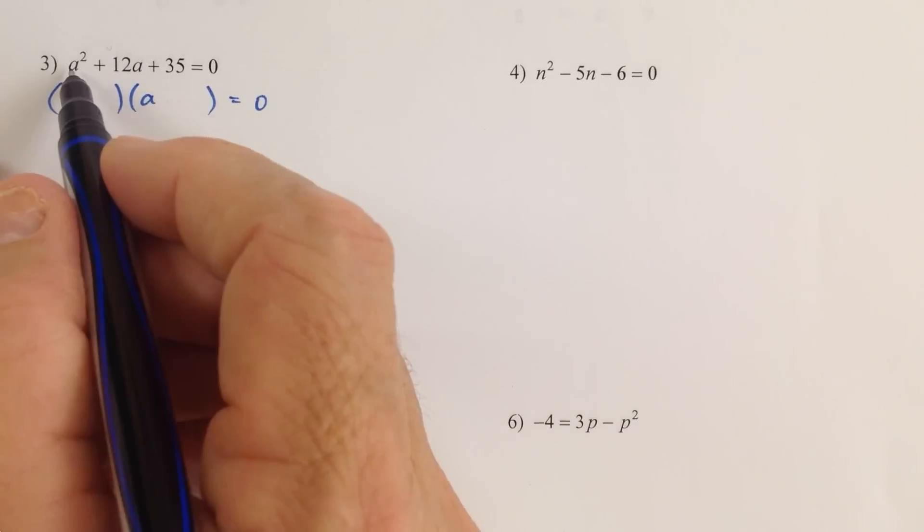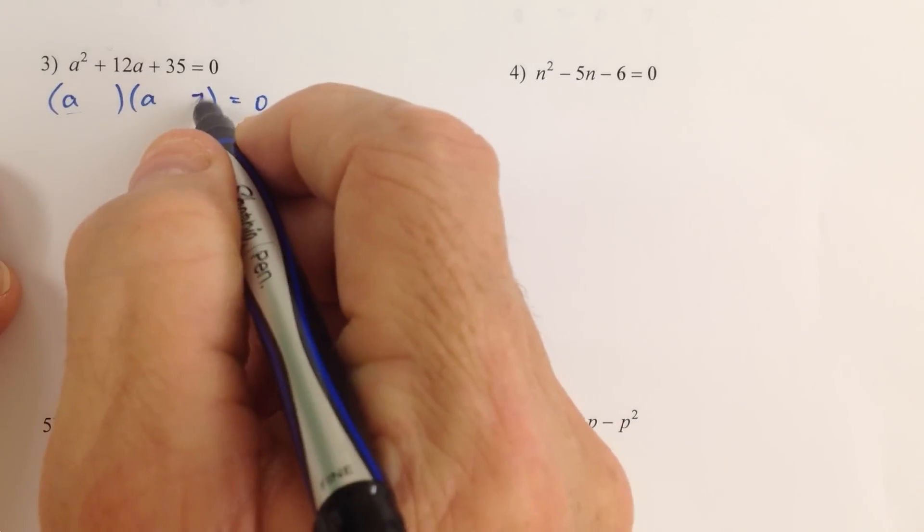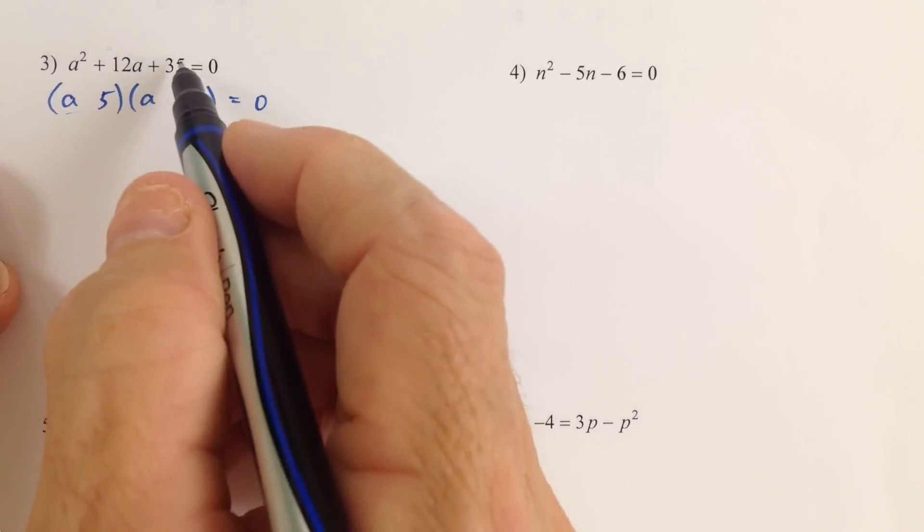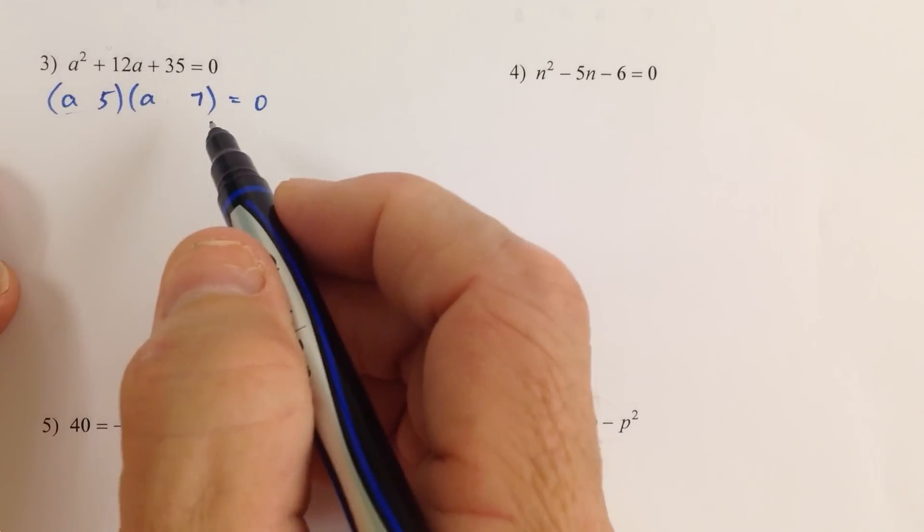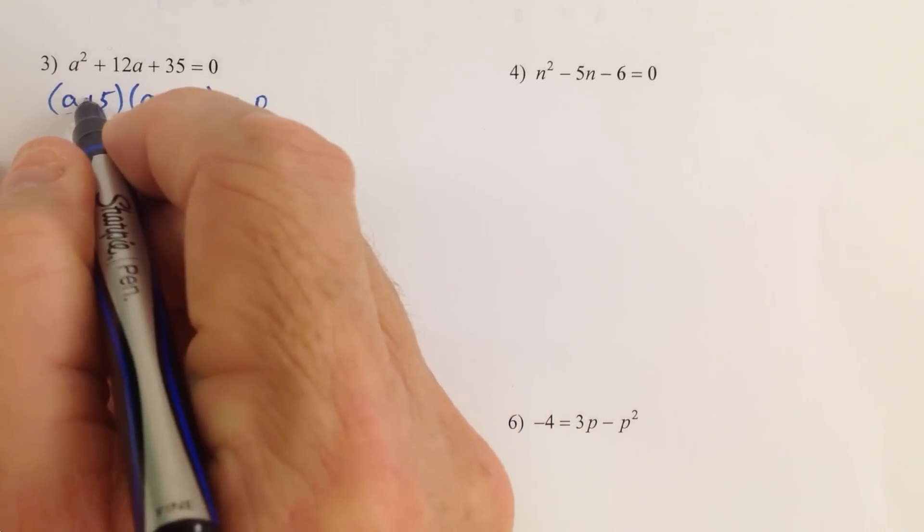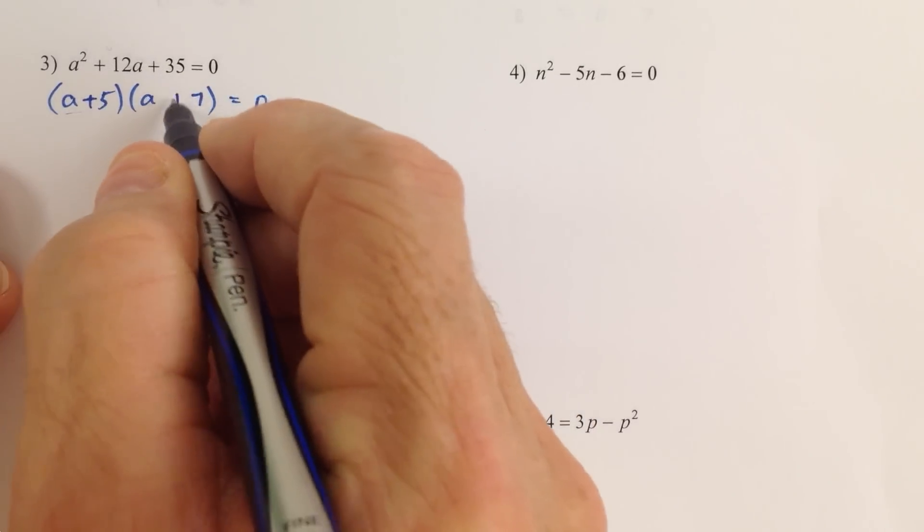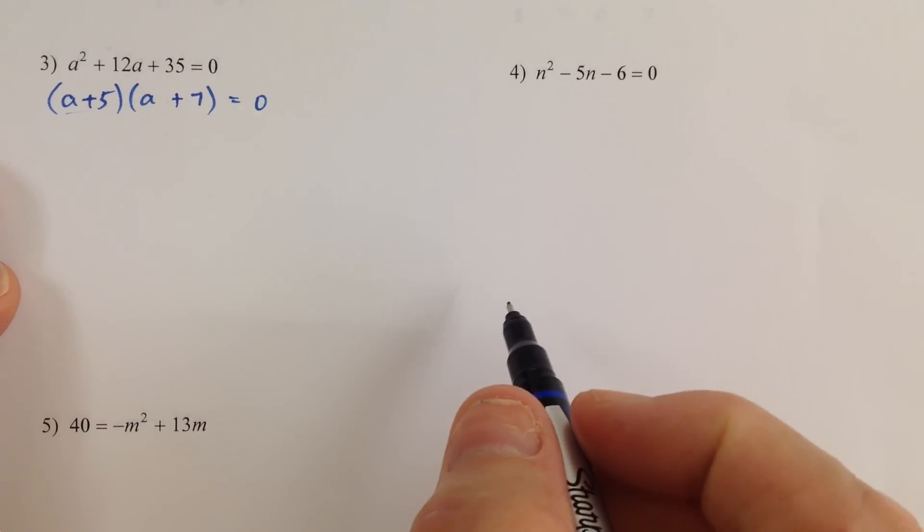So we're going to try a times a, that gives us the first term. 7 times 5 are two factors of 35 that add up to 12, so that looks good. So we have a plus 5 multiplied by a plus 7 equaling 0.